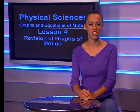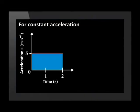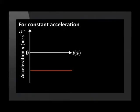Since the acceleration is constant, the acceleration graph is a straight line parallel to the x-axis. If the velocity increases at a constant rate, the acceleration-time graph is a horizontal line above the x-axis. If the velocity decreases constantly, the acceleration is negative, meaning the acceleration versus time graph is a straight line parallel to the x-axis but below the x-axis.